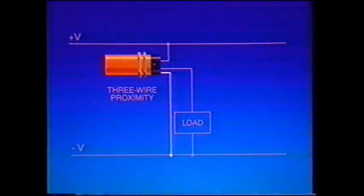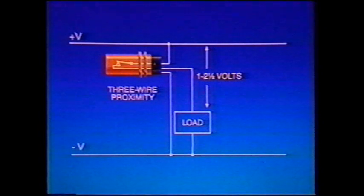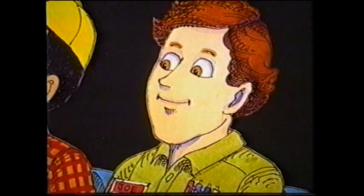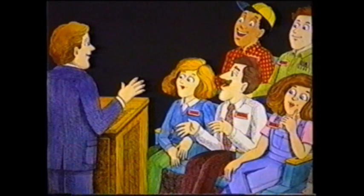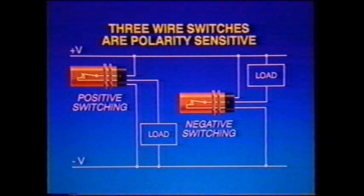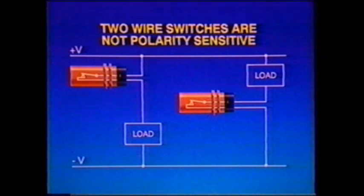A three-wire proximity switch is different because energy for the switch is supplied through a third wire. When the three-wire switch is closed, it has a smaller voltage drop — usually one to two and a half volts — and when it is open, the three-wire switch has essentially zero leakage current. Two-wire switches have many advantages: because there is one less wire to connect, two-wire switches cost less to install. Three-wire switches are polarity sensitive — you must specify and stock separate switches for positive or negative switching applications. But two-wire switches are not polarity sensitive, so you can stock one switch and reduce the spares needed. The same switch will interface with both positive and negative switching programmable controllers.